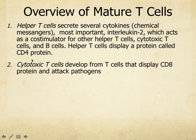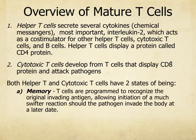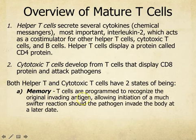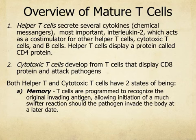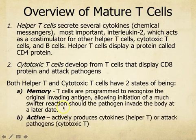Cytotoxic T cells are still in the T cell class but different — they actively attack other cells and display the CD8 protein. Both types have two states: the memory form, which is like an at-rest form that's already programmed to recognize the original invading antigen, and the active form, which is either producing cytokines like interleukin-2 if you're a helper T cell, or actually attacking the pathogen if you're a cytotoxic T cell.